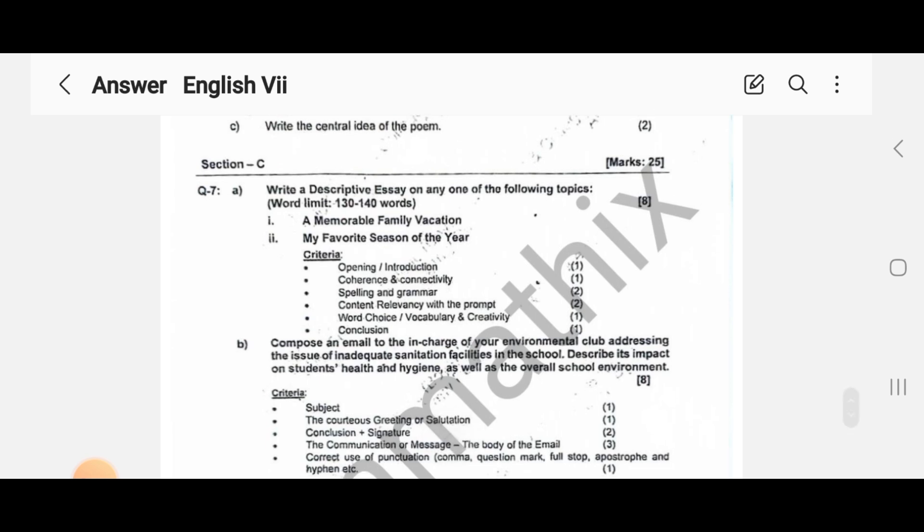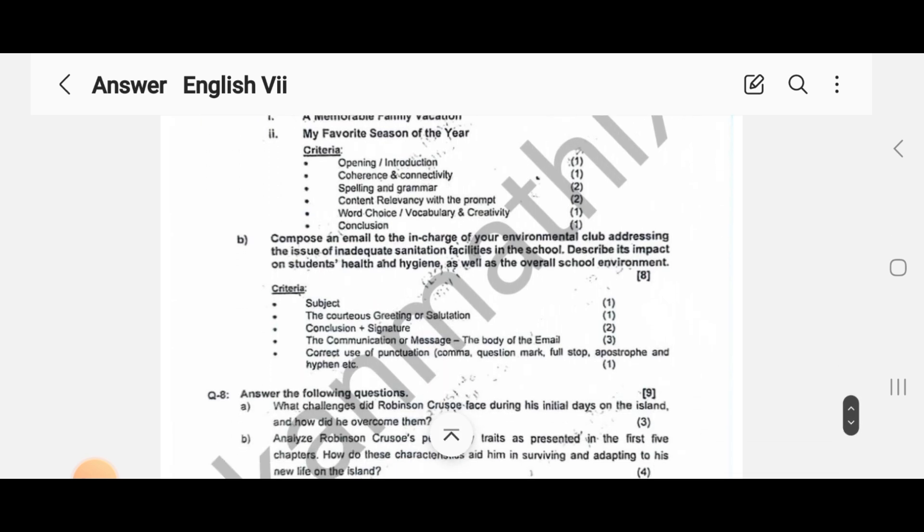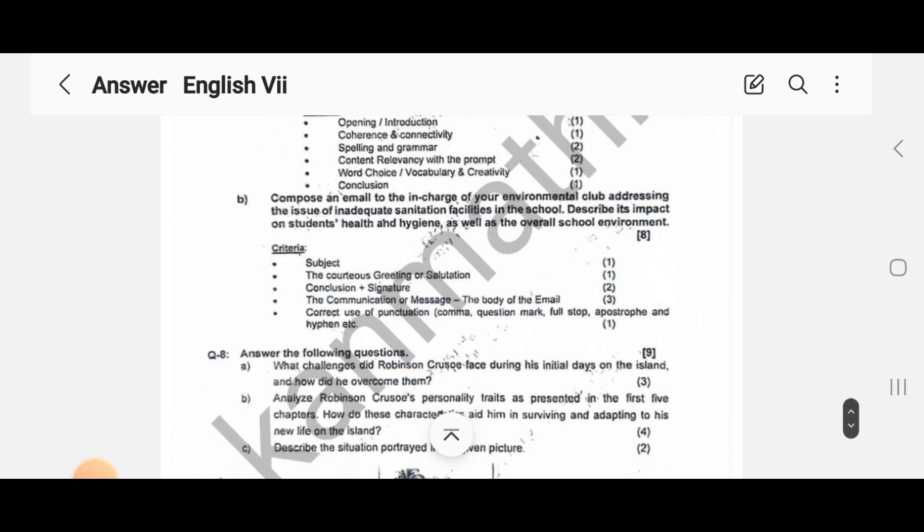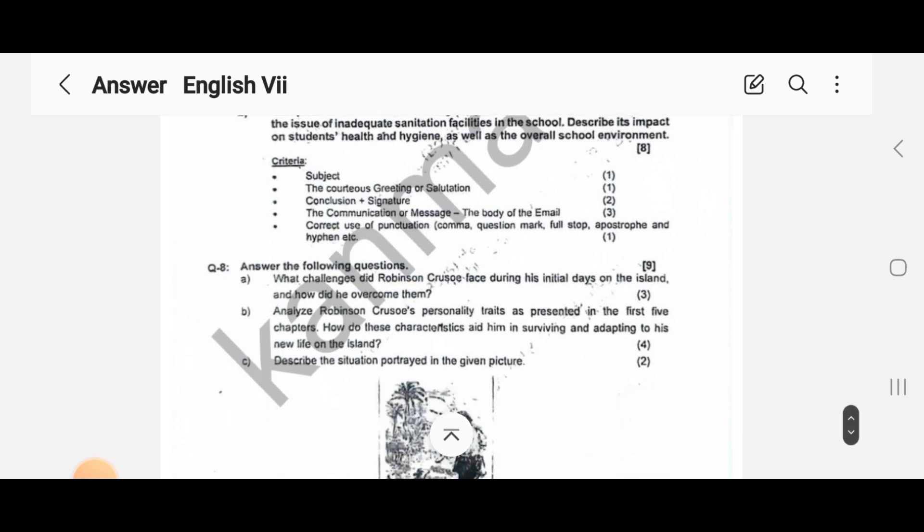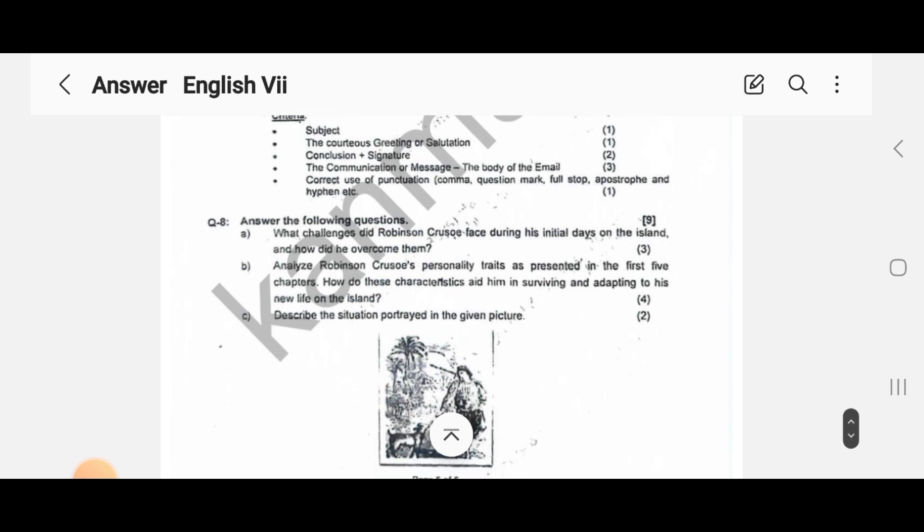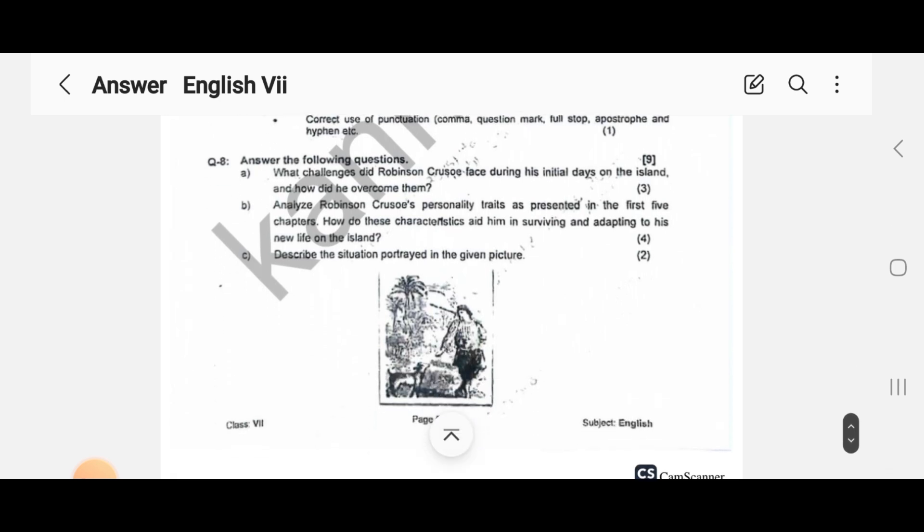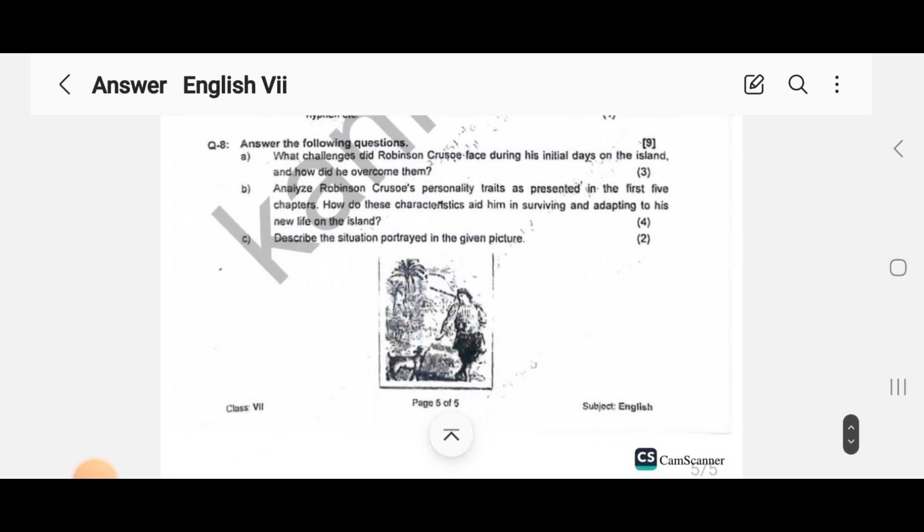Section C, question number seven: you have to write a descriptive essay on topics like 'A Memorable Family Vacation' or 'My Favorite Season of the Year'. Then B part is given, and question number eight: you have to answer the following questions from the novel.